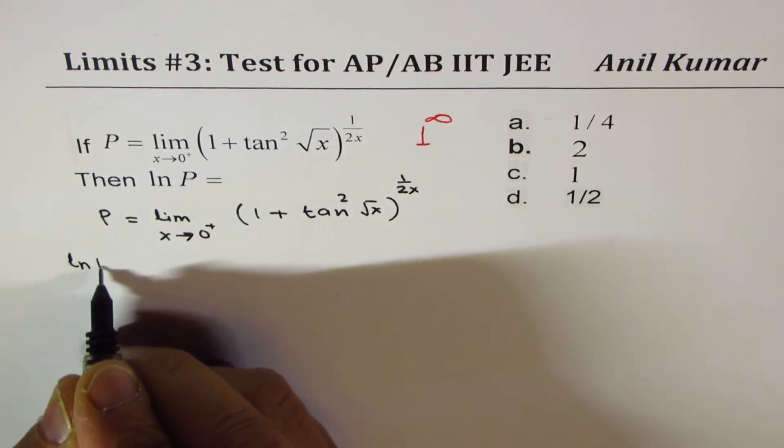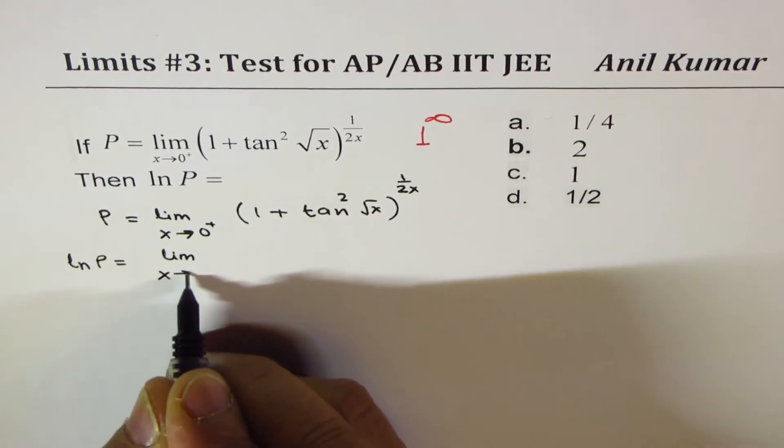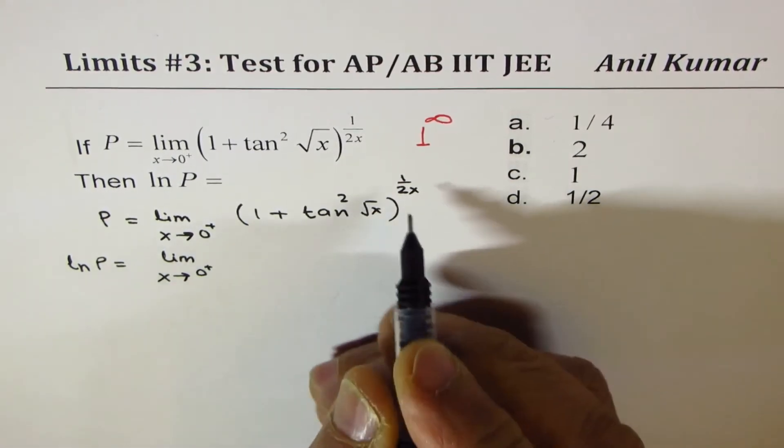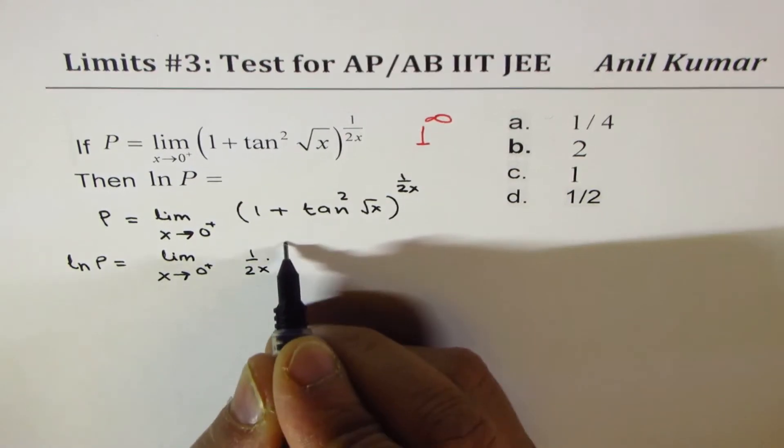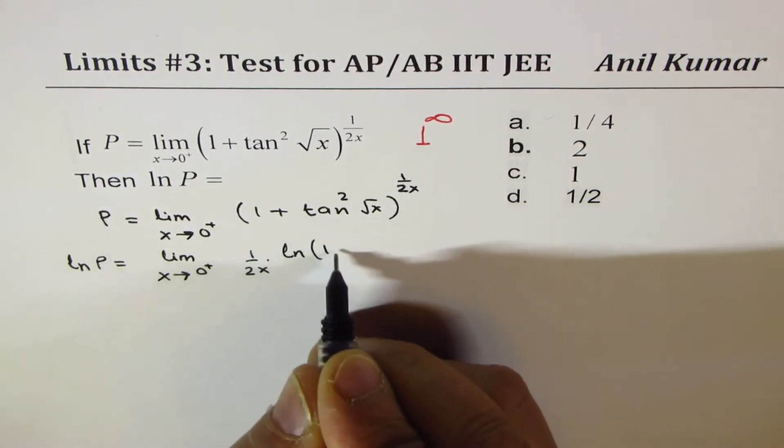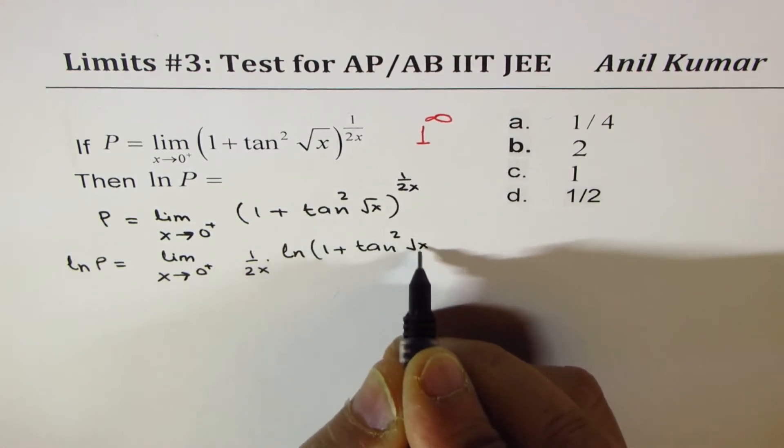So if I take natural log of both sides, I get ln P equals to limit x approaches 0 plus. Now here we get (1/2x) times ln(1 + tan²√x).